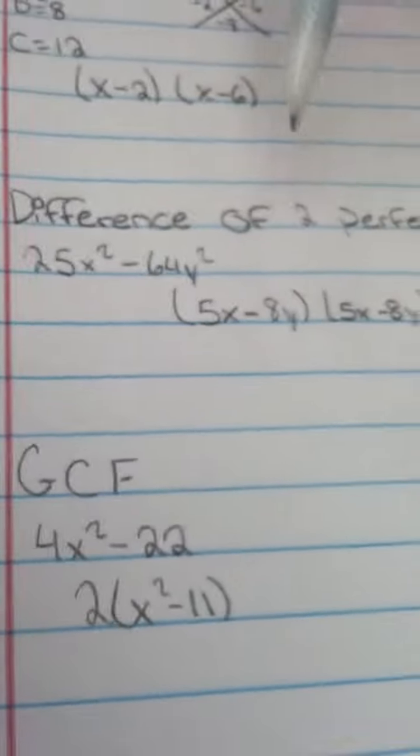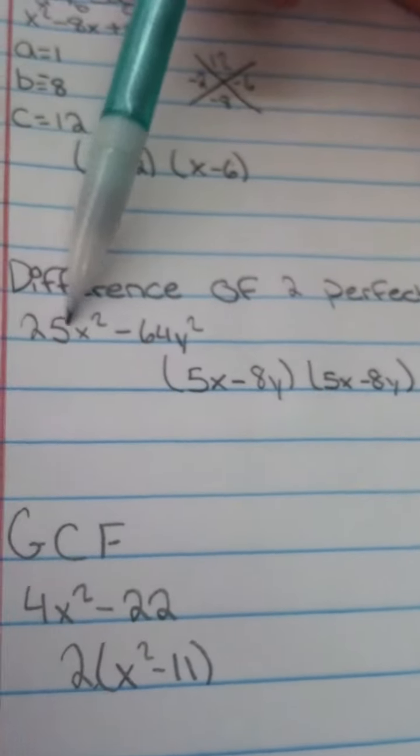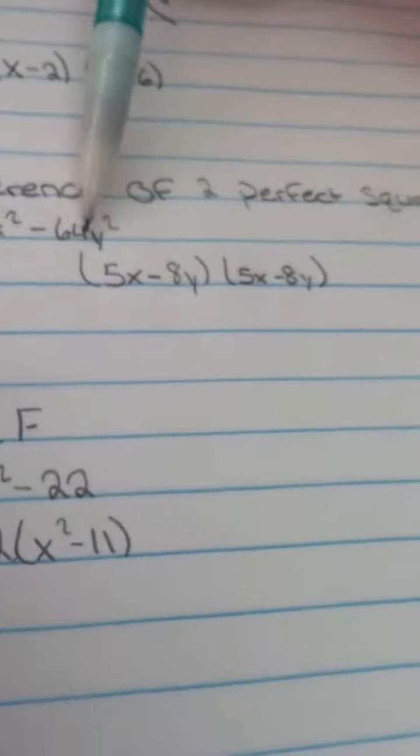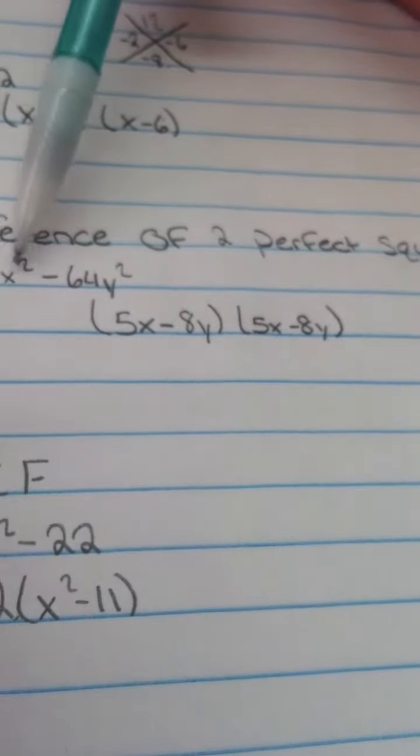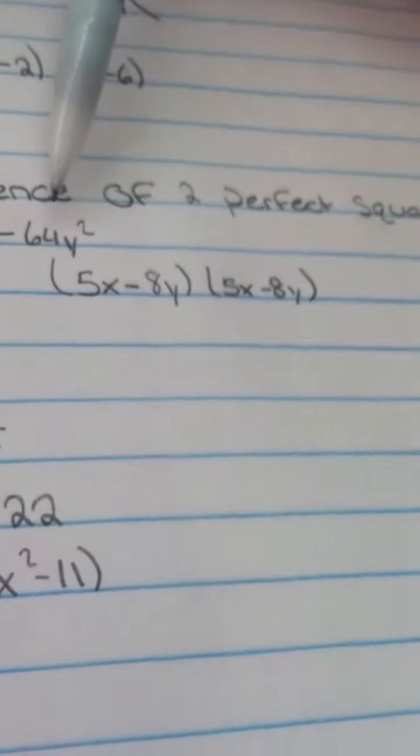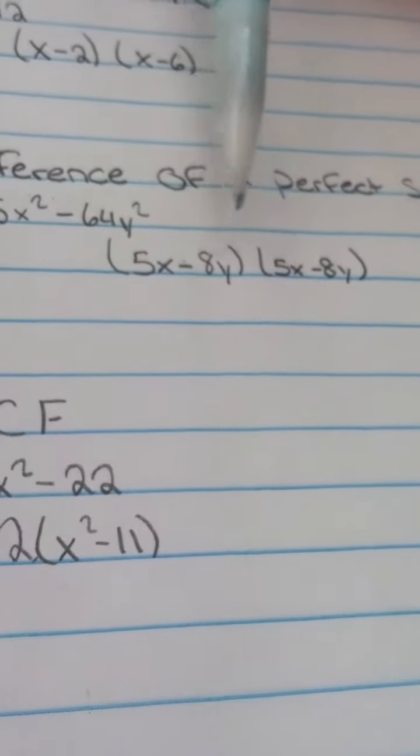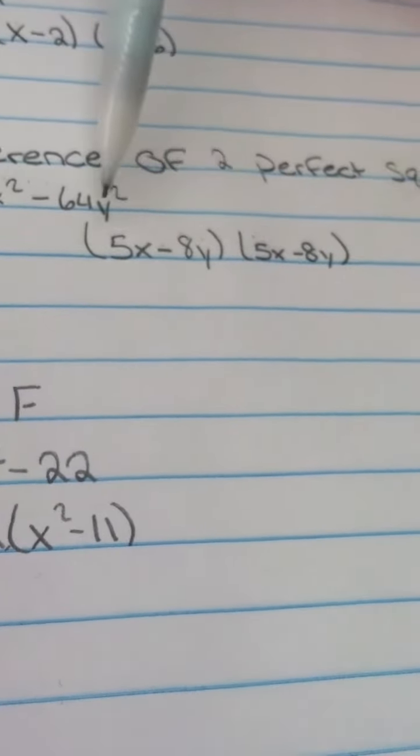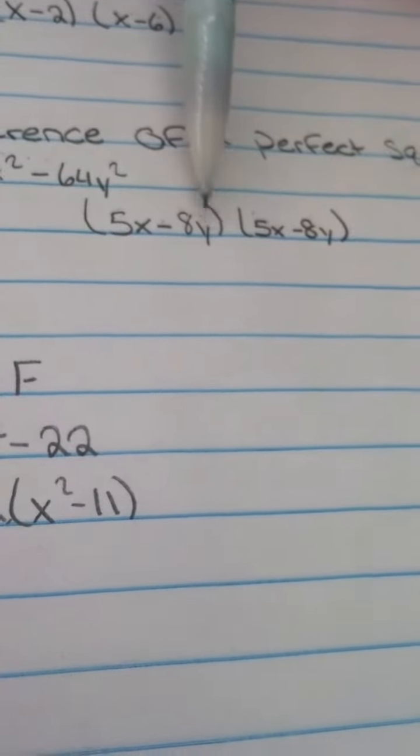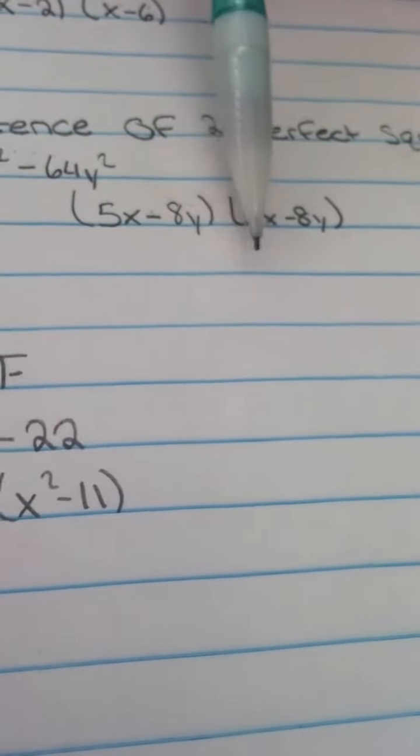For the difference of two perfect squares, this is the first thing you have to do. The problem is 25x squared minus 64y squared. So what you have to do is factor each one. So what can go into 25 would be 5x. What can go into 64 would be 8y. So you would do 5x minus 8y, and then 5x minus 8y. So now you combine them. 5x and 5x would be 25x squared. 8y multiplied by 8y would equal 64y squared.